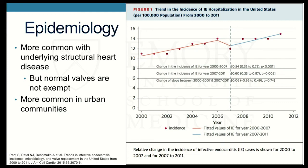Epidemiologically, we primarily see this in patients with a predisposition — essentially structural heart disease. But anywhere from one-third to one-half of patients now with normal valves have endocarditis, and it's more common in urban communities. From 2000 to 2011 the incidence has been steadily increasing. In 2007 there was a change in prophylaxis guidelines, but regardless, the slope of increase before and after was the same.